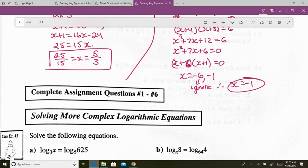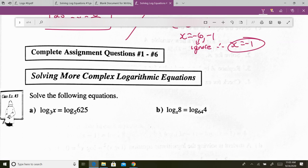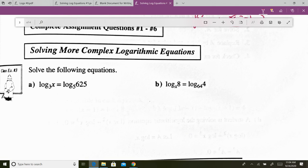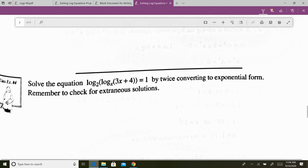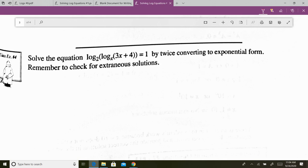Last question. We're not doing this one. log 2 of log x of 3x plus 4 is equal to 1. There's a log inside of a log, right? So the person that wrote this question is stupid. Who would want to do that right? However, it's actually simple to solve because really it's a log equaling number.